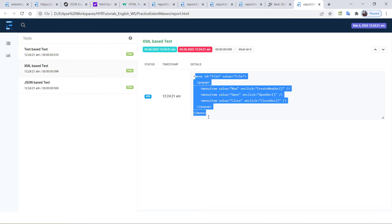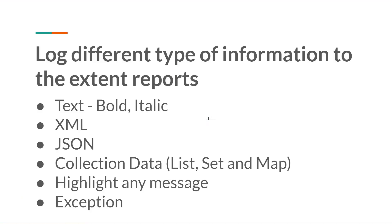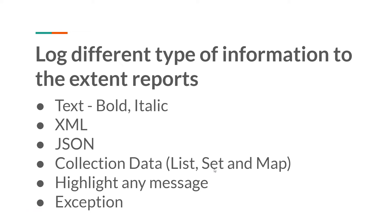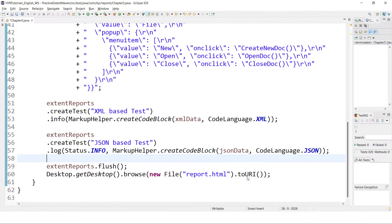The XML data is properly formatted and easy to understand, and the same applies to the JSON data. This is how you work with JSON and XML type data in Extent Reports. Next, we have collection data — what if you have a list, set, or map of values? How do you display those in Extent Reports? I'll show you all three — List, Set, and Map. Let me jump back to Eclipse and create those data structures.